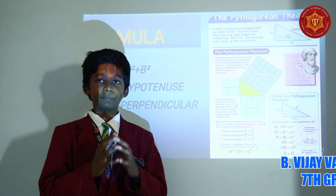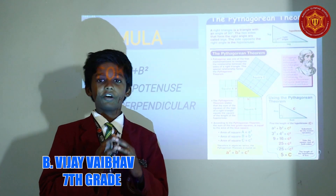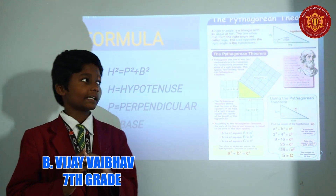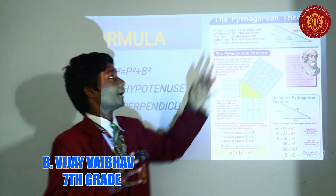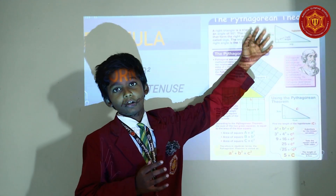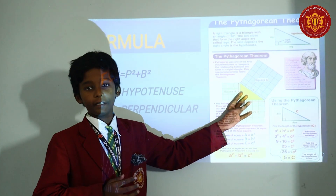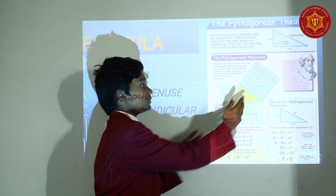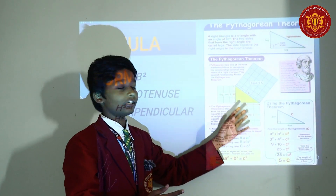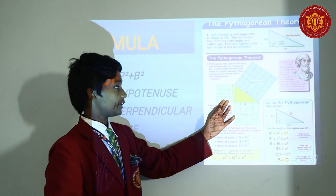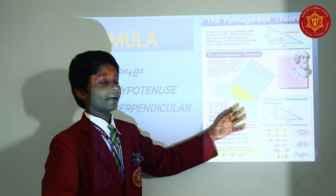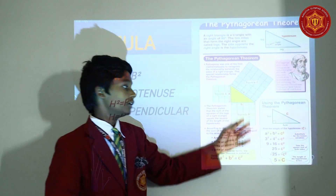Hi, my name is B.E.J. Vaibhav from Sun Class Data Section. I will explain about the Pythagoras theorem. For any right-angled triangle, the hypotenuse square is equal to the altitude square added to the base square.